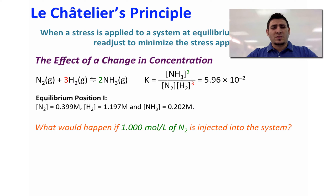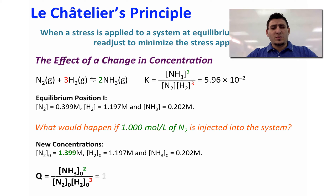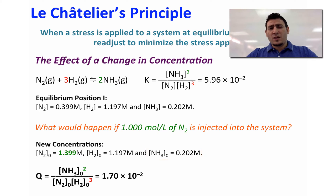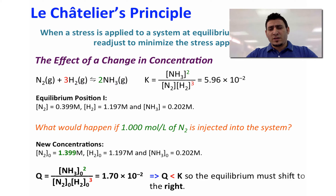The new concentrations of the components would be: nitrogen equal to 1.399 molar, hydrogen stays at 1.97 molar, and NH3 also stays at 0.202 molar. These are the new initial concentrations. We can use these to find Q, the reaction quotient. Q equals 1.70 times 10 to the power minus 2, which is smaller than K, and therefore the system must shift to the right side.